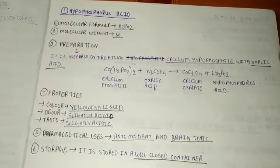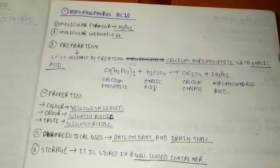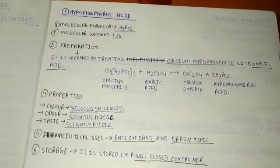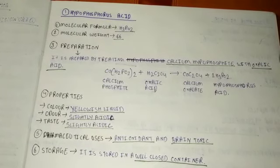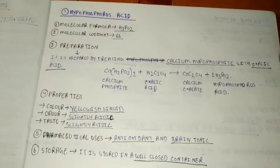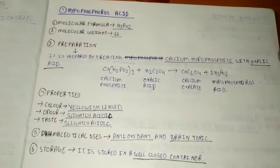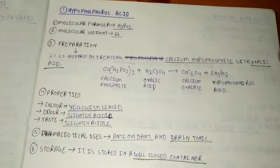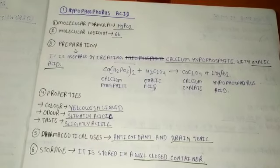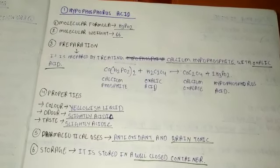Its properties: it is a yellowish liquid in color, slightly acidic in odor and slightly acidic in taste. Its pharmaceutical uses: it is used as an antioxidant and brain tonic, and it is stored in a well-closed container. Thank you very much.